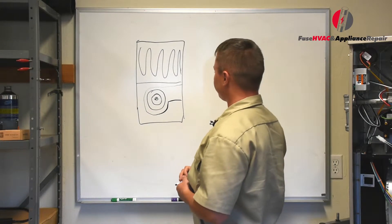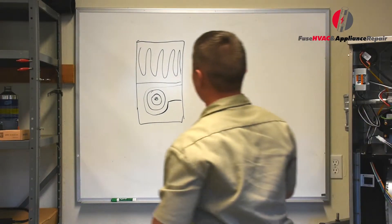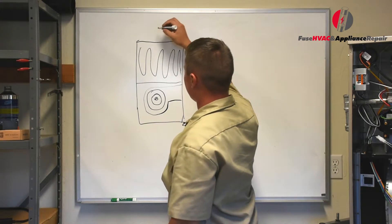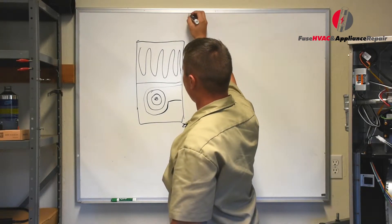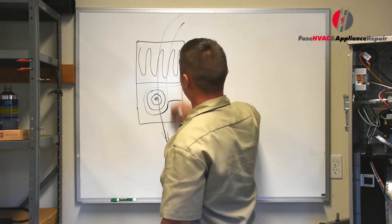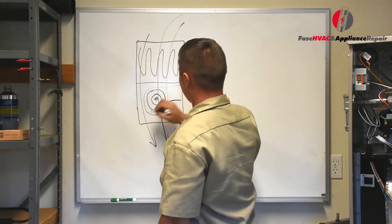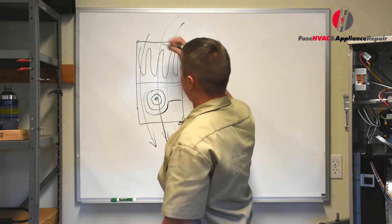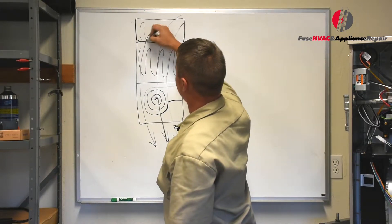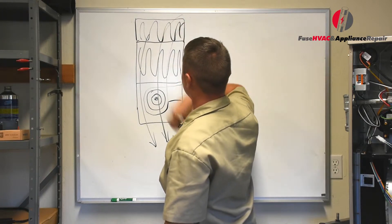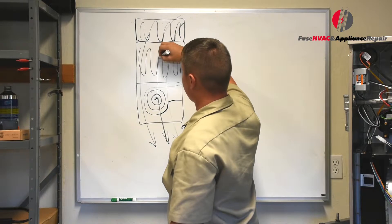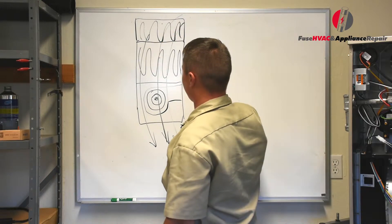The blower wheel motor usually moves air through the heat exchanger and through the evaporator. If we have an air conditioner unit with an evaporator coil, the air will go through the evaporator and heat exchanger together at the same time.